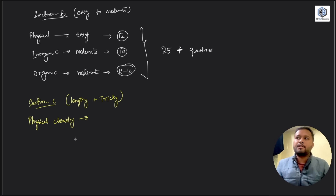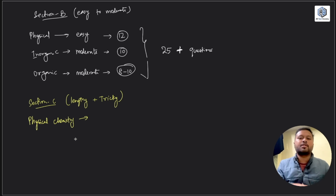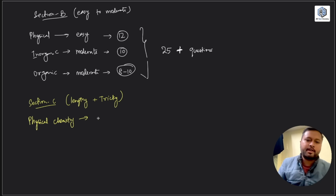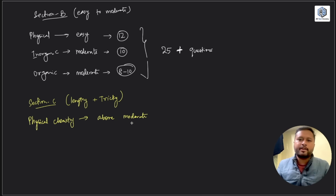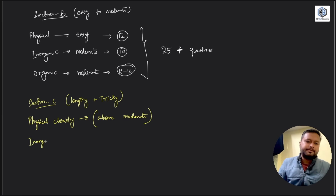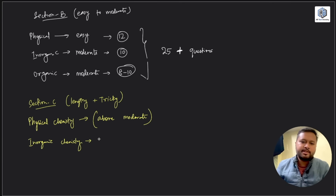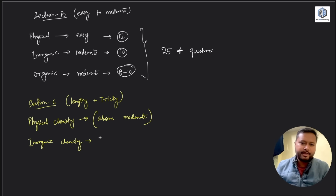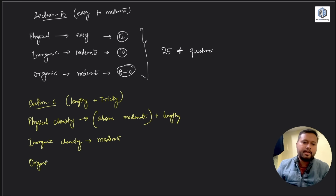There were other tricky questions too, like one from Langmuir adsorption isotherm requiring extensive calculation or derivation to reach the answer. Physical Chemistry in Section C I'd say was above moderate — not very tough but not easy or just moderate either. Inorganic Chemistry in Section C was relatively easier compared to Physical Chemistry — questions were more straightforward, though some were a little tricky — overall moderate.